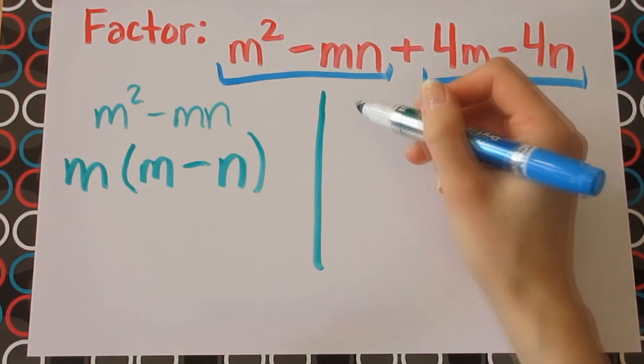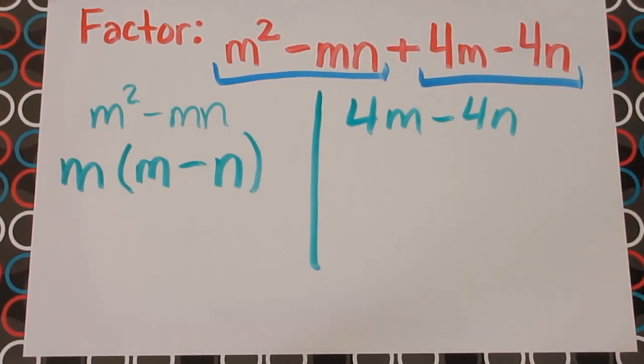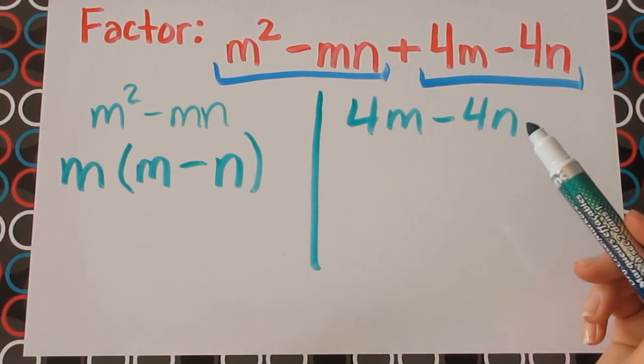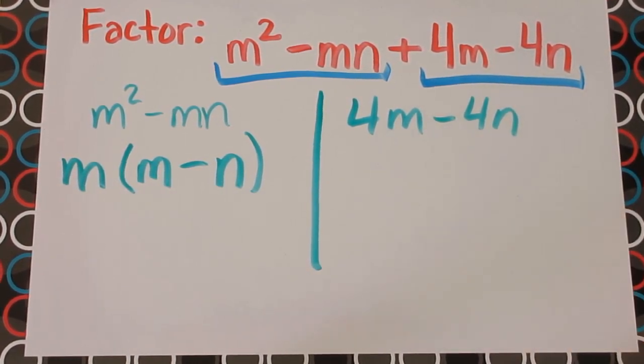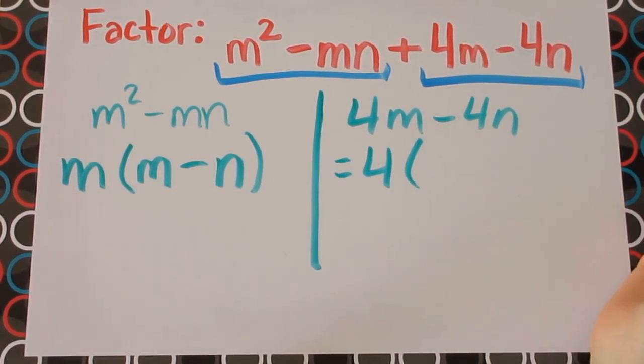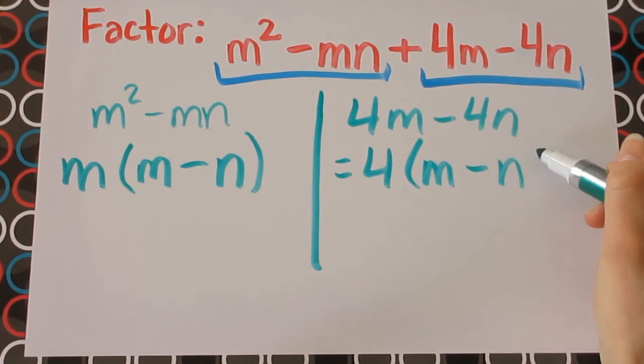Let's take a look at the other side, 4m minus 4n. So what do you see in common here? There's an m here, an n here, those can't really be taken out, but there's four in both terms. So let's factor out the four. And when you divide both terms by four, you're left with m minus n.